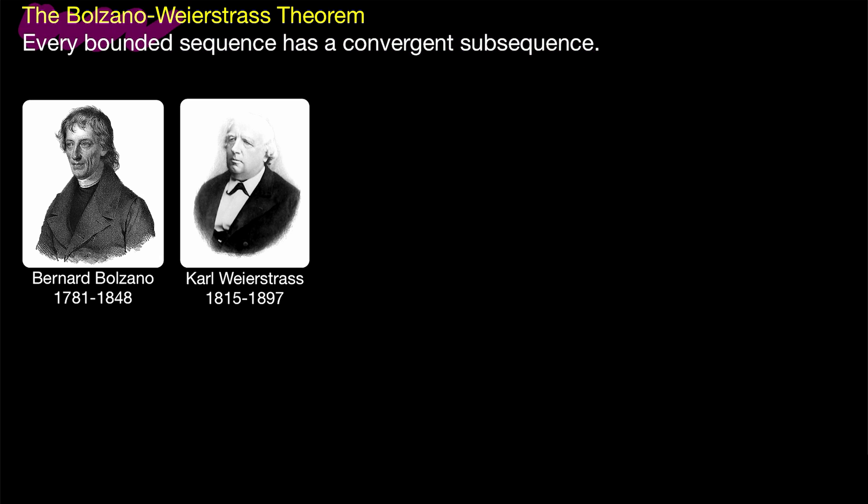Although this is a big exciting theorem for us, for Bolzano, he just proved it as a lemma when he was proving the intermediate value theorem. We'll learn about that theorem later, but for now, let's go through the quick proof of the Bolzano-Weierstrass theorem.